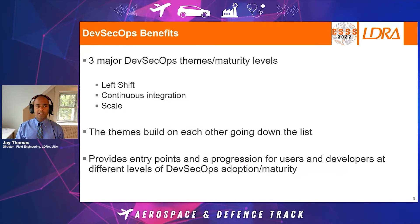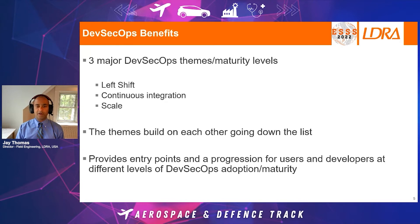When we dive into the details, there are three themes and maturity levels, and we'll touch upon these again in the conclusion. The first is the idea of shifting left, which we in the avionics space are very familiar with — we want to find our defects early before the risks can be catastrophic. Continuous integration is also a key element. One of the things that DevSecOps does well is scale; it is intended for use by large organizations, with many practices that extend from the individual developer to very large teams. These themes build upon each other and provide a progression of activities that users and developers can embrace as they explore the concepts.